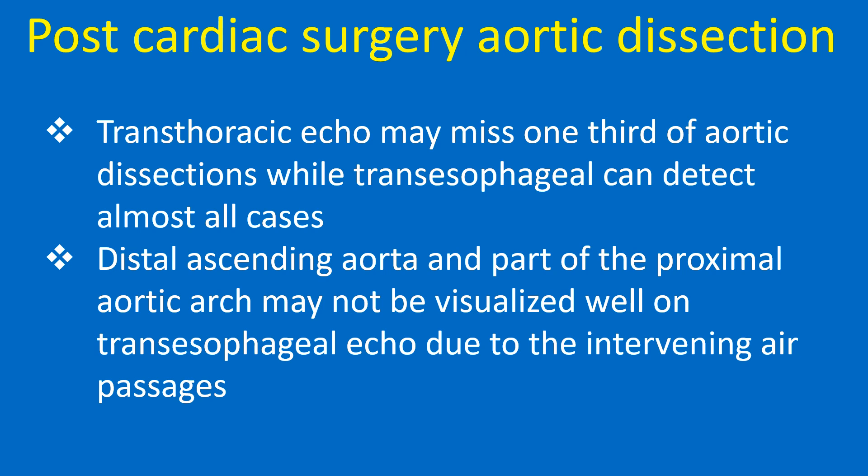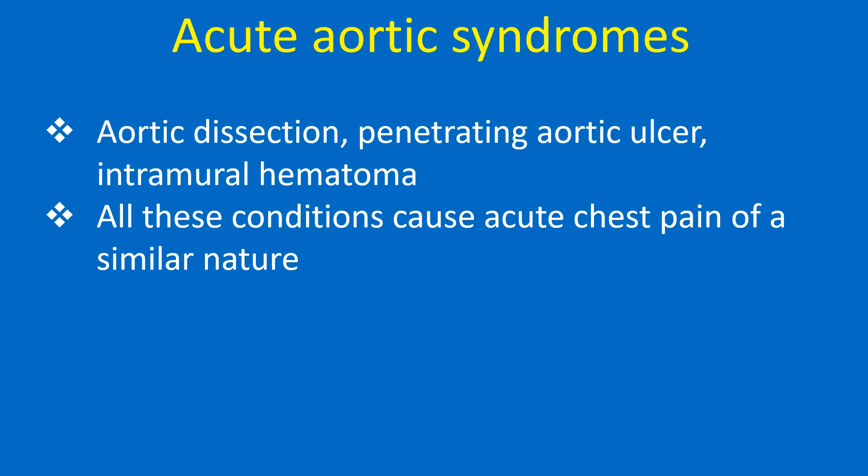The distal ascending aorta and part of the proximal aortic arch may not be visualized well on transesophageal echo due to intervening air passages. The three acute aortic syndromes — aortic dissection, penetrating aortic ulcer, and intramural hematoma — all cause acute chest pain of a similar nature.